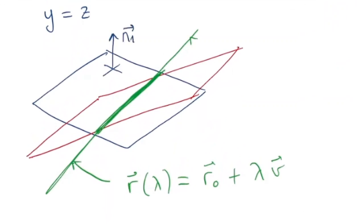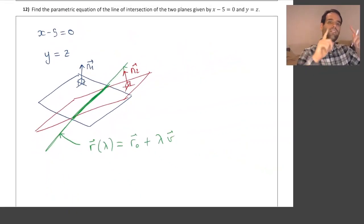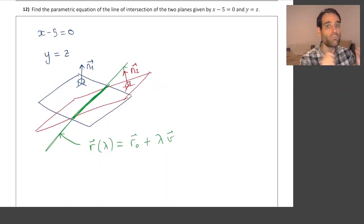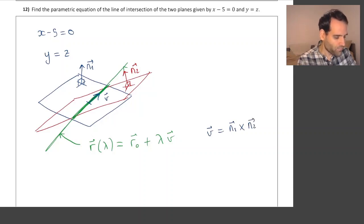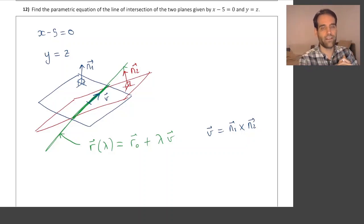Let's call them n1, perpendicular to the first plane, and n2, perpendicular to the second plane — so 90 degrees like that. Once we have those two normal vectors, the line of intersection must be orthogonal to both of them. This means we can find a vector v which is parallel to the line by doing the cross product of the two vectors n1 and n2.